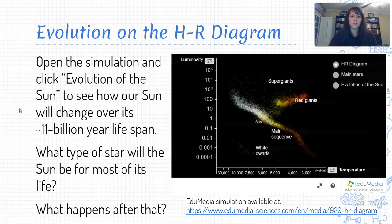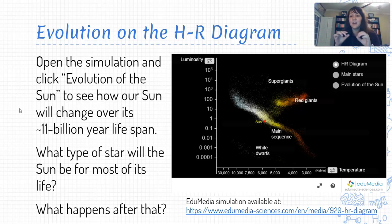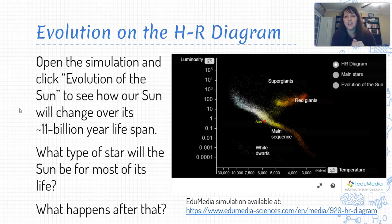I'm linking another simulation on Edpuzzle so you can interact with the HR diagram and see what's going on. My big recommendation is to look in the upper right menu for a checkbox next to 'evolution of the sun' — go ahead and click that and you'll get to see the sun's evolution over time traced out for you. Feel free to pause me while you do that. Then tell me: what type of star will the sun be for most of its life?